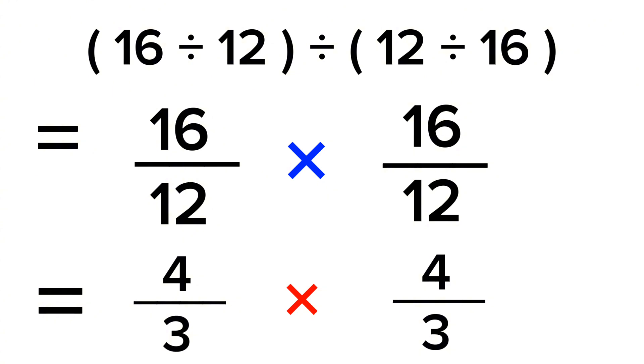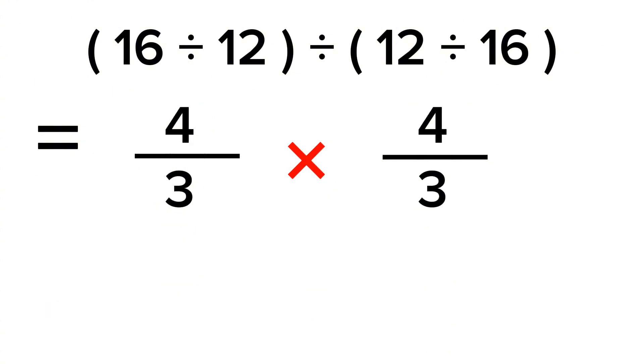This can be our answer, or we can actually simplify this. Let's simplify it more. So 16 by 9 can be written as 9 plus 7 by 9, which gives us 1 times 7 by 9.